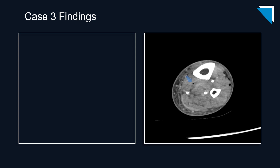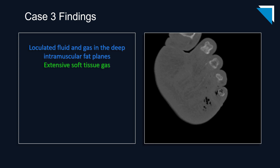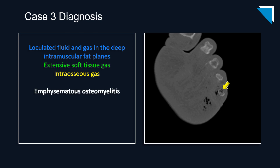Let's review the findings. There is loculated air and fluid dissecting through the deep intramuscular fat planes — quite a bit of soft tissue gas, in keeping with the history of necrotizing fasciitis. But you would really have to be dedicated to your search pattern not to miss the intraosseous gas in the fifth phalanges. This is another case of emphysematous osteomyelitis. CT scan is the modality of choice for these. It is very difficult to pick up, but if you see lots of soft tissue gas, scrutinize those bones carefully.